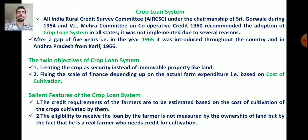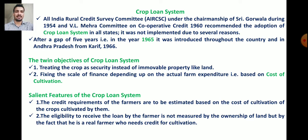Now, the twin objectives of the crop loan system. Keep in mind: two committees recommended the adoption of the crop loan system — Sri Gorwala in 1954 and the VL Mehra Committee in 1960. The crop loan system came into existence in 1965, and was first introduced in Andhra Pradesh in 1966.